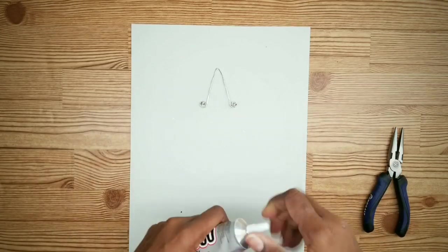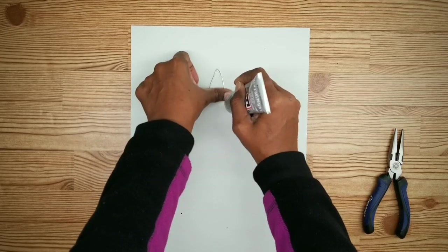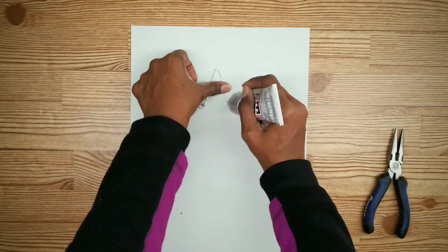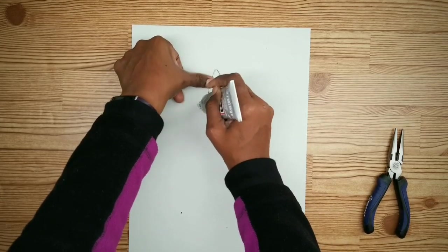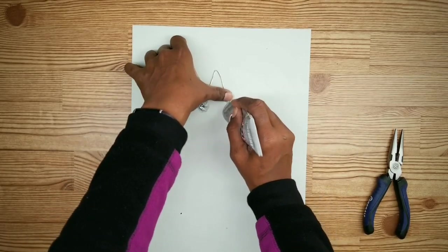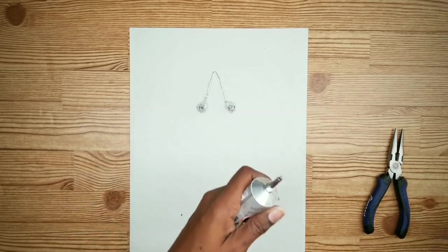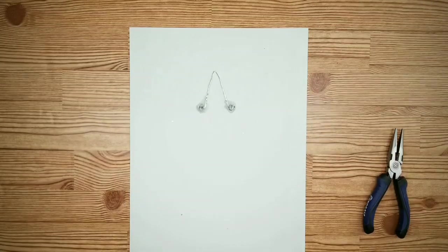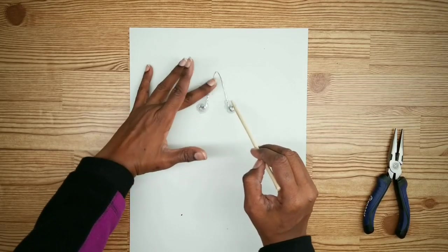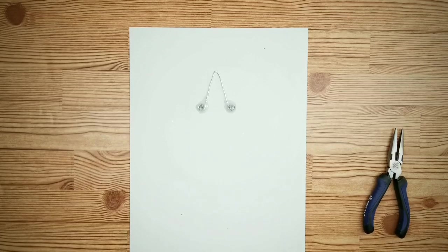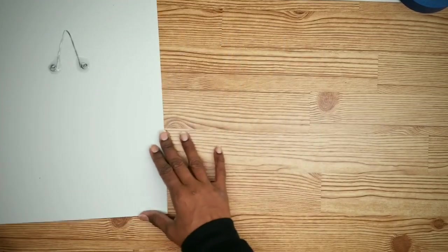Now grab that E6000 and we're going to apply a generous amount to each one of the side coils. We want to go ahead and clean up any excess with a skewer or a pencil. Now we're just going to take this and push it to the side to dry.